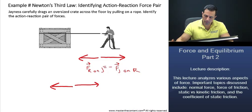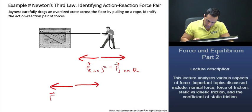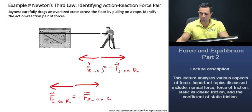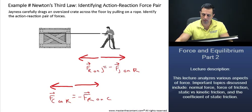Secondly, we also have a force that the crate exerts on the rope that is equal and opposite in direction to the force that the rope exerts on the crate.